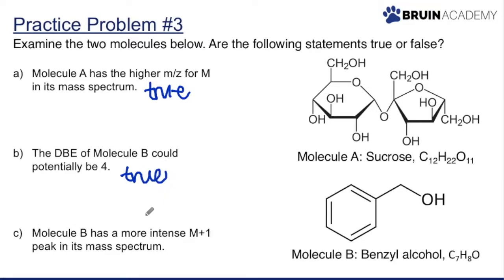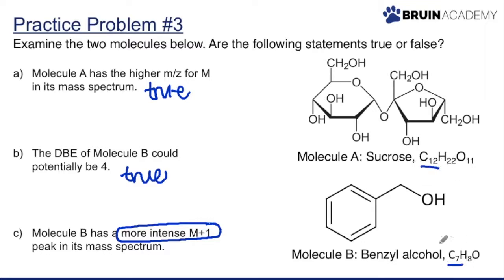The last question: molecule B has a more intense M+1 peak. M+1 intensity depends on the number of carbons. Sucrose has 12 carbons and benzyl alcohol has 7. Since sucrose has more carbons, it would have a more intense M+1 peak — not benzyl alcohol. So this statement is false. Less carbon means a less intense M+1 peak. Those are the three practice problems — thanks for listening!